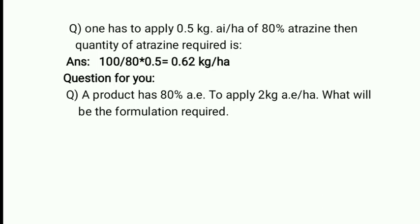Example problem: if one has to apply 0.5 kg active ingredient per hectare of 80% atrazine, the quantity of atrazine required is calculated as: recommended dose (0.5 kg) × 100 ÷ 80 = 0.625 kg. A similar practice question has been given — please comment your answer in the comment section.